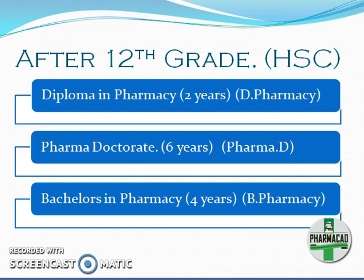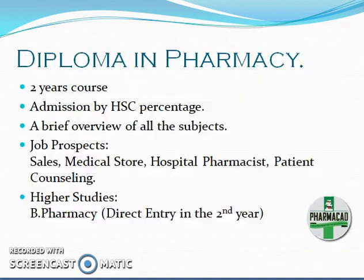So, if we wish to pursue pharmacy after our 12th grade, we have three options. One is Diploma in Pharmacy — it is a two-year course. Then we have Pharma Doctorate, which is a six-year course. And we have Bachelors in Pharmacy, which is a four-year course. Let us study each one in detail.